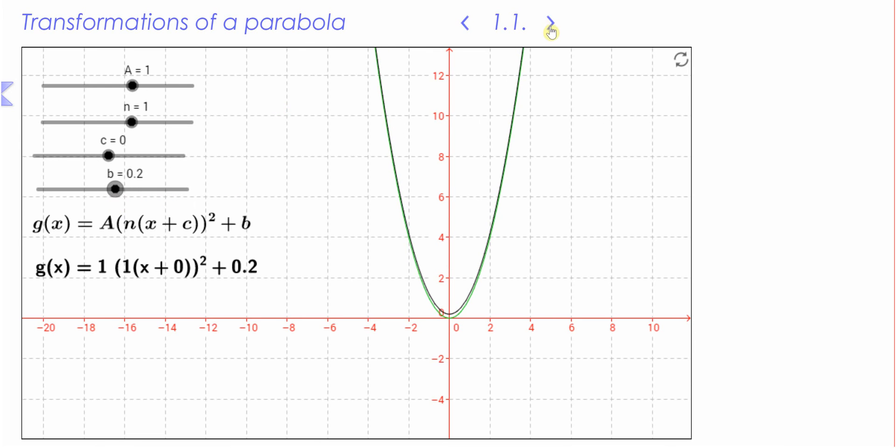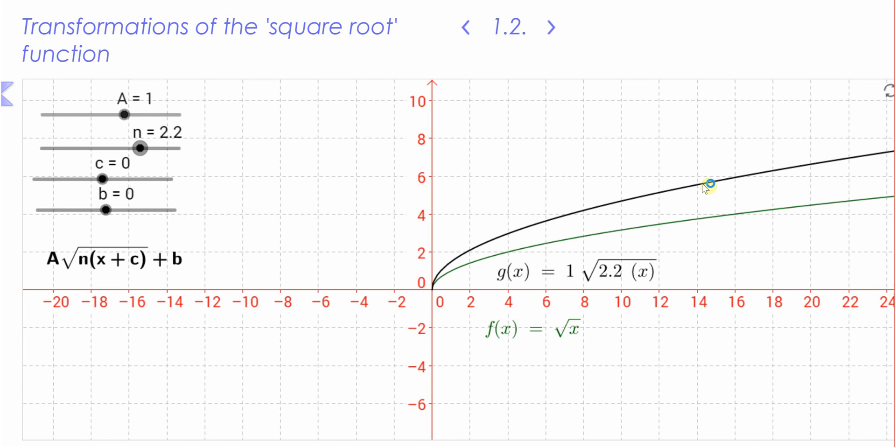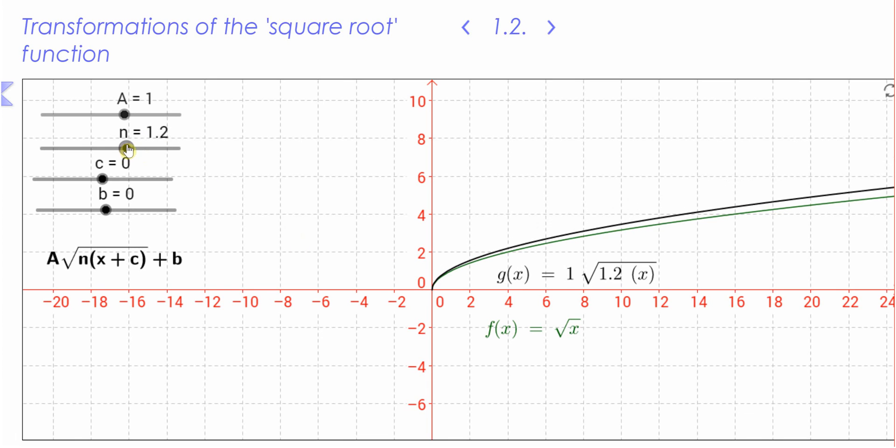Okay, let's have a look at a different graph. So here we have the graph in green, y = √x. Once I change this to 1 and 1, so y = √x.